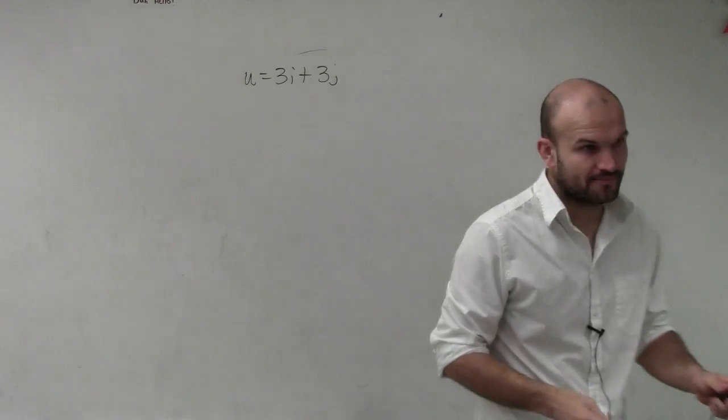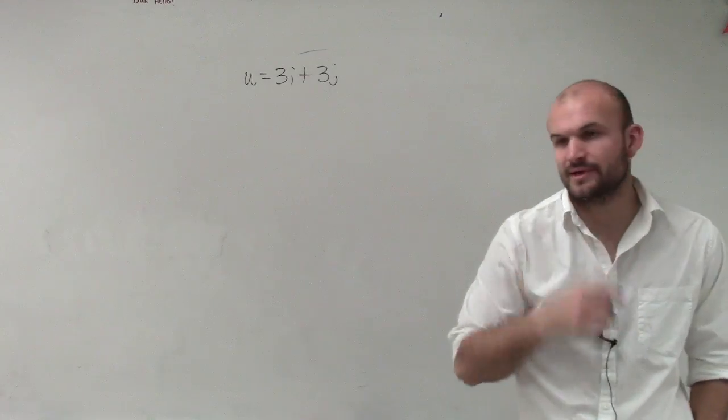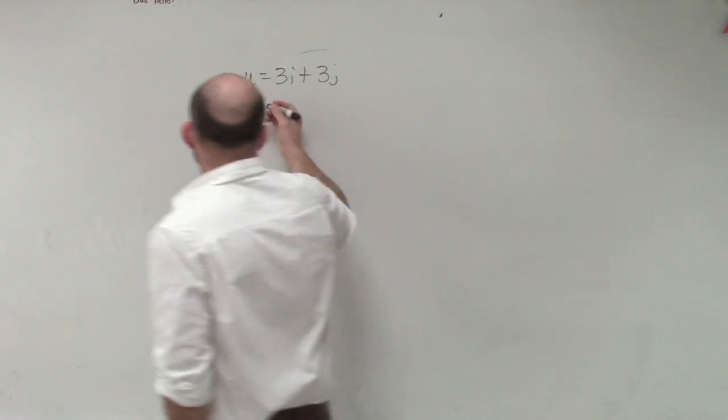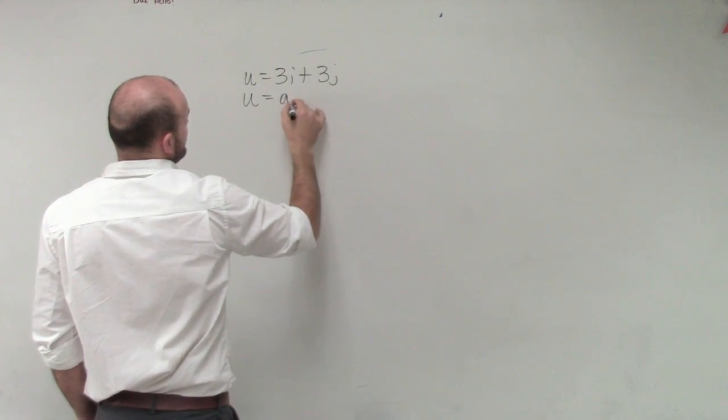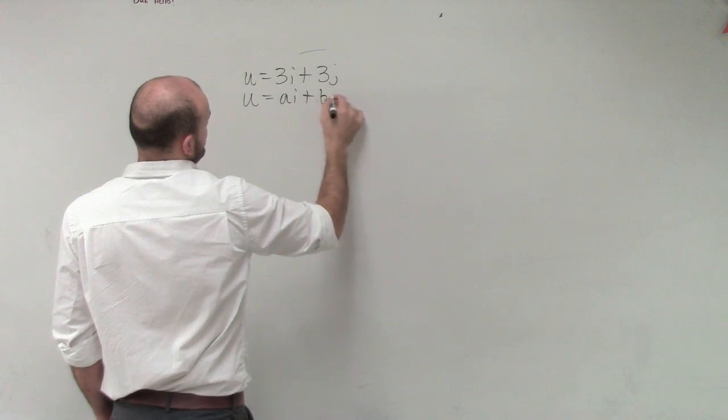mu equals 3i plus 3j. I went through that whole long spiel for pretty much you guys to understand that any vector we have as ai plus bj.